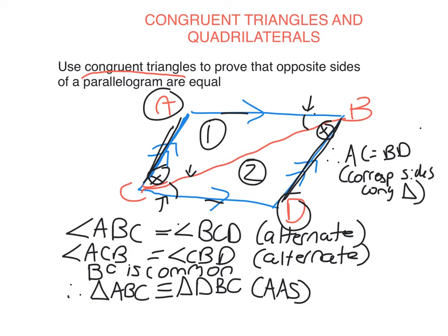Now, because I have congruent triangles, this side corresponds to this side in the congruent triangles. So therefore, I've also got that DC is equal to AB. And again, the reason is the same, corresponding sides of a congruent triangle.